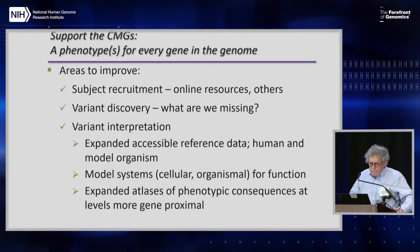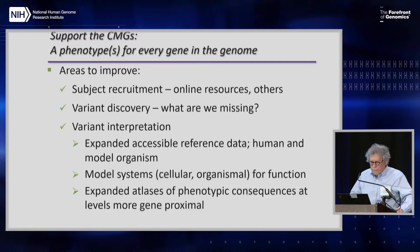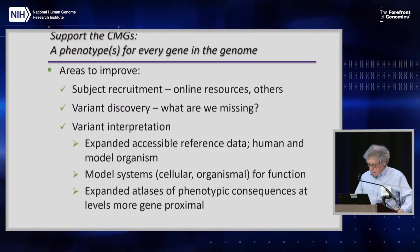Another challenge is variant interpretation. For this, we need additional tools of the type we've heard about from many at this podium: expanded access to reference data — human data and model organism data — a robust set of model systems, both cellular and organismal for functional studies, and expanded atlases of phenotypic consequences at levels of the gene more proximal than the clinical phenotype — that is, moving into the metabolome, the RNA, the proteome, and so forth. Those are goals that would accentuate the progress of the CMGs.